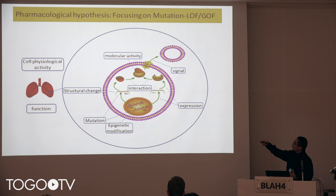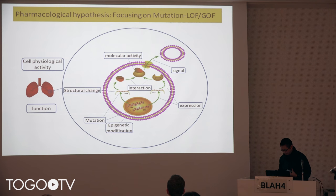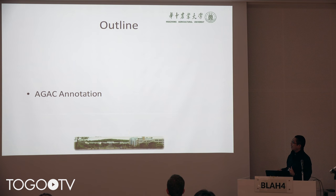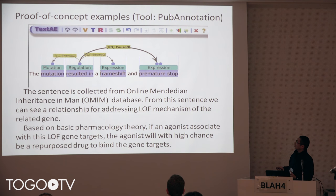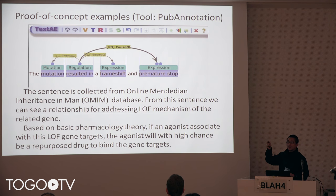Also at the level of tissue, we will annotate the cell and tissue physiological activity and function. For our ongoing work, we are doing annotation like this. Here is an example: a mutation resulted in a frameshift and premature stop. This is a very similar pattern as shown in the GENIA corpus.